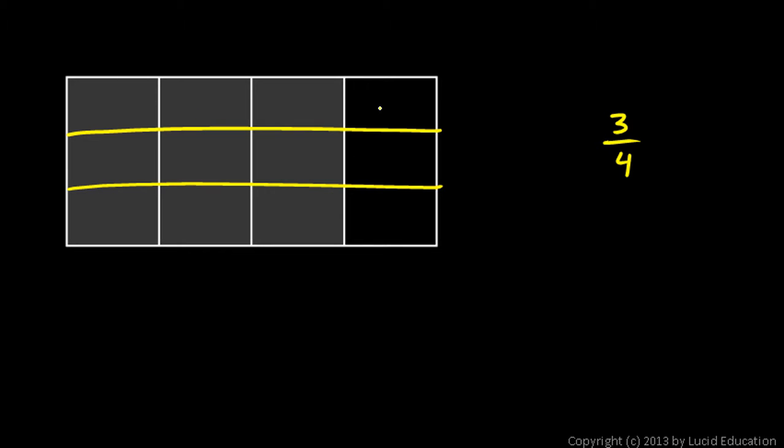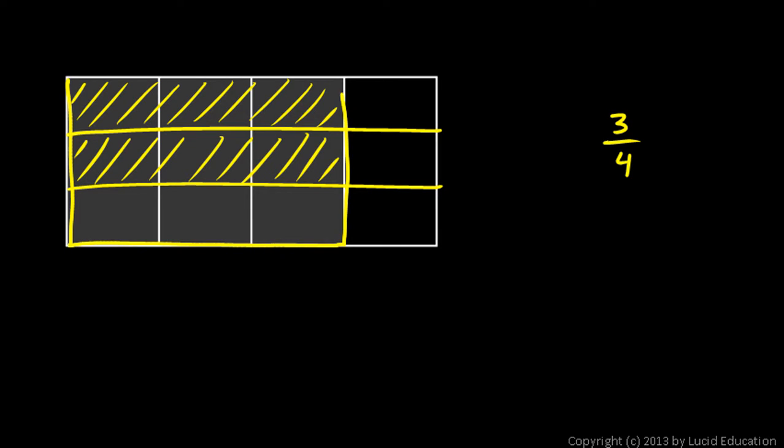But instead of shading two thirds of the entire rectangle, I'm just going to take this portion, the three fourths, and I will shade in two thirds of that. So two thirds of the three fourths. So if I draw some diagonal lines here to represent shading of two thirds, but not two thirds of the entire thing, just two thirds of the three fourths, then I get a picture that looks something like this.